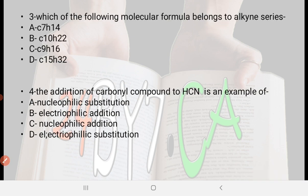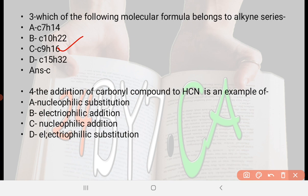Next: Which of the following molecular formulas belongs to the alkyne series? Option A: C7H14, option B: C10H22, option C: C9H16, option D: C15H32. The right answer is option C, which is C9H16. The molecular formula that belongs to the alkyne series is C9H16.